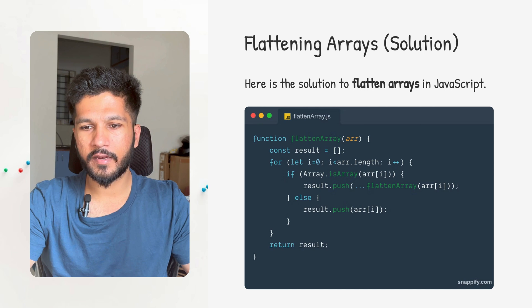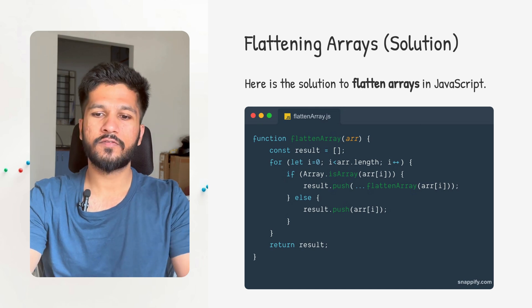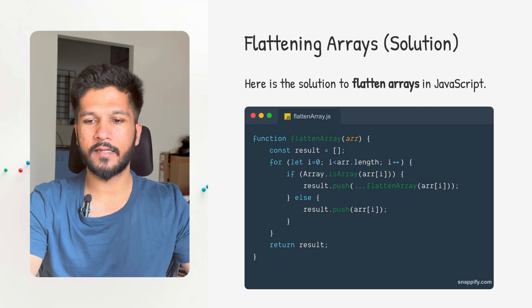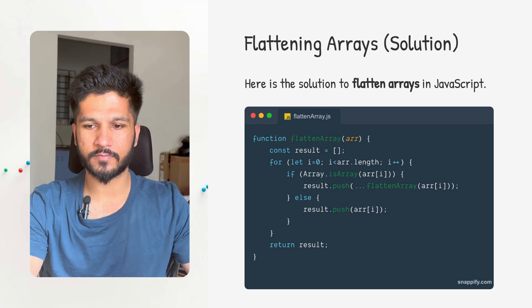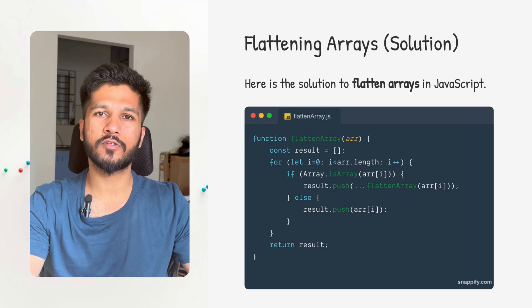Let's see how the solution looks. I want to keep this video short so you can watch it before each JavaScript interview. I'll keep the solution section very brief — you can pause the video, understand the solution, and get back to me in the comments if you don't understand anything. Here in the solution, we are creating a function called flatten array. This function will return a result, and inside of it we are doing some manipulations. Pause the video to understand the solution clearly.